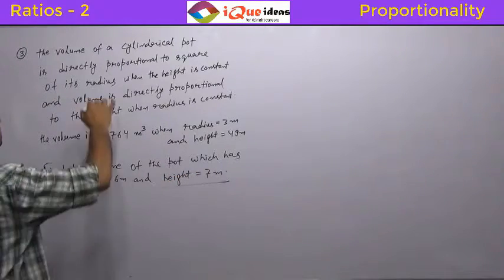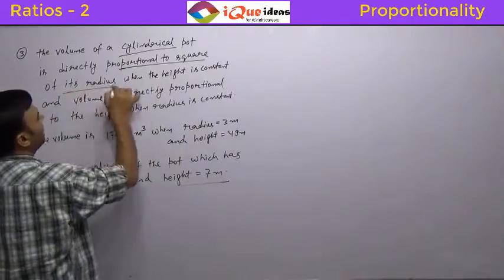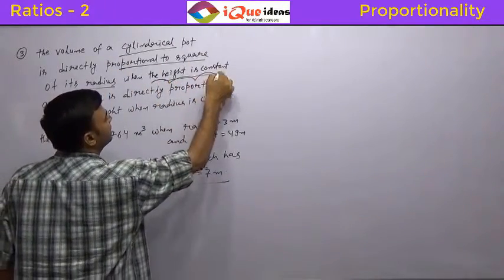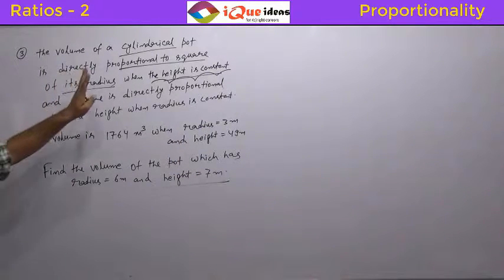Now this question says the volume of the cylindrical pot is directly proportional to square of its radius when the height is constant. Now do not get confused by this. This is just a way of saying that we have to consider both radius and height.